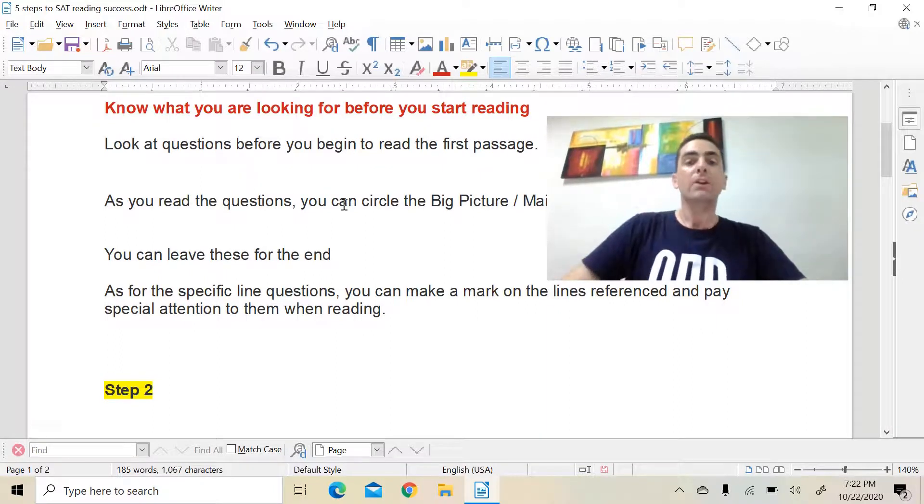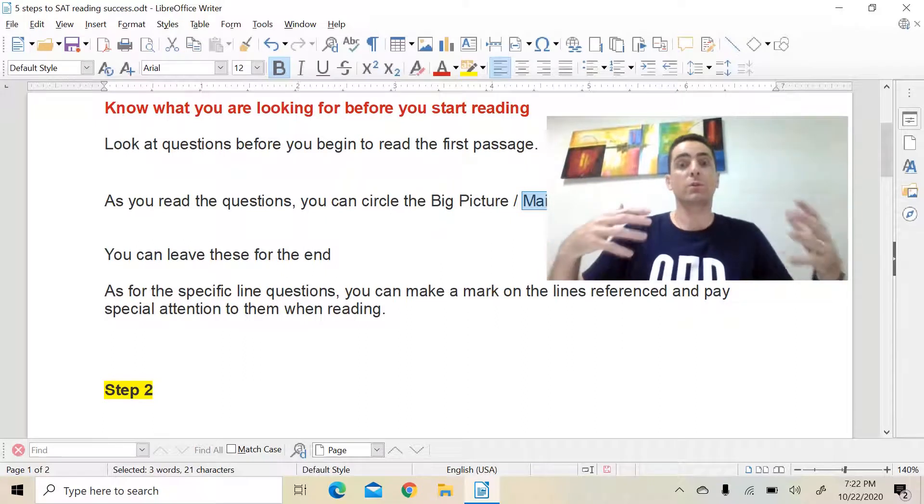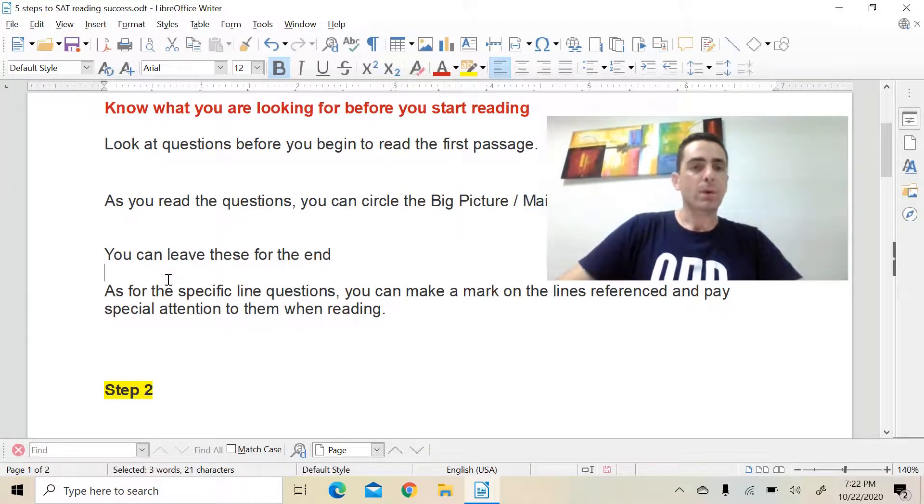Now, as you're doing that, you have to think to yourself, which of these questions are big picture questions? Which are main idea questions? These are questions that require you to have read a large portion of the text or all of the text before you can answer the question. What you should do is circle those questions and then you'll come back to answer those at the end once you've answered all the other questions.